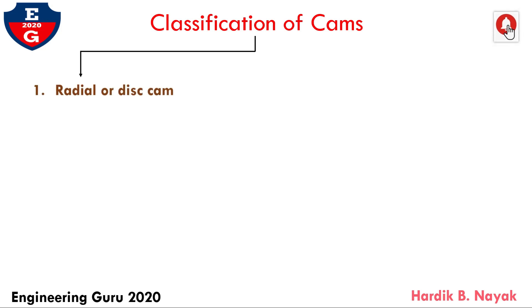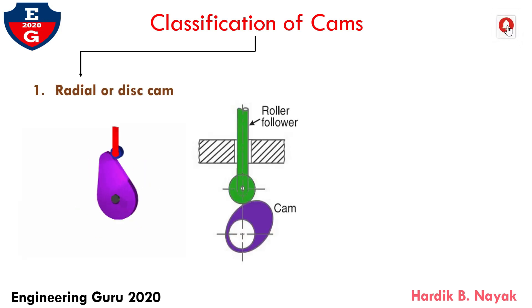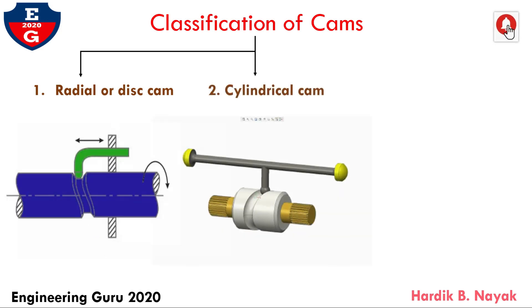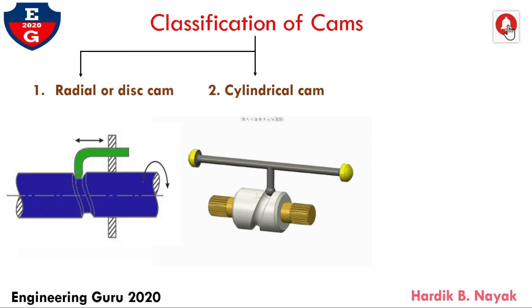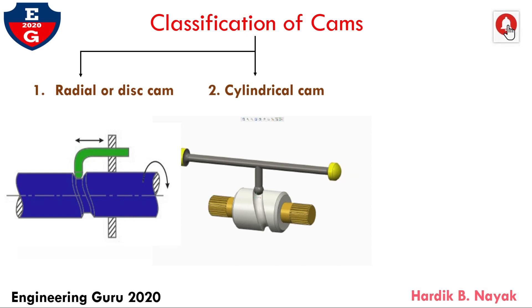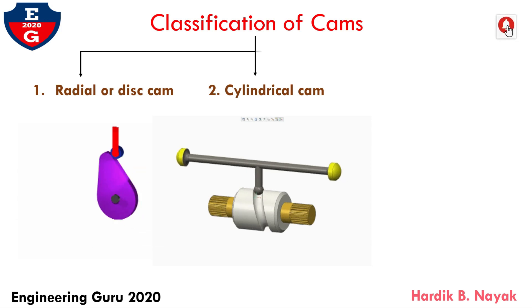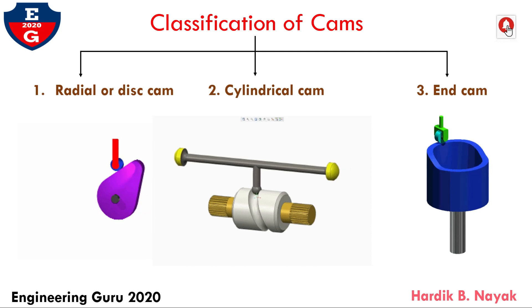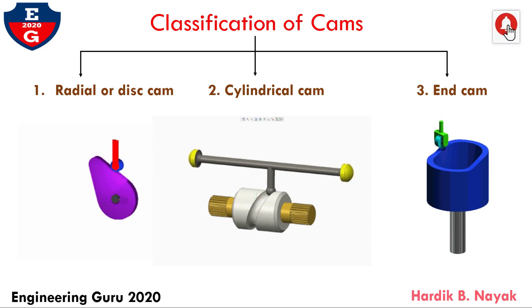Classification of cam is divided into three types. First, radial or disc cam: in radial cam, the follower reciprocates or oscillates in a direction perpendicular to the cam axis. Second, cylindrical cam: in cylindrical cams, the follower reciprocates or oscillates in the direction parallel to the cam axis; the follower rides in a groove at its cylindrical surface. And the final type is end cam: in end cam, a reciprocating portion of a cylinder, the follower translates or oscillates whereas the cam usually rotates. The end cam is rarely used because of the cost and difficulty in cutting its contour.